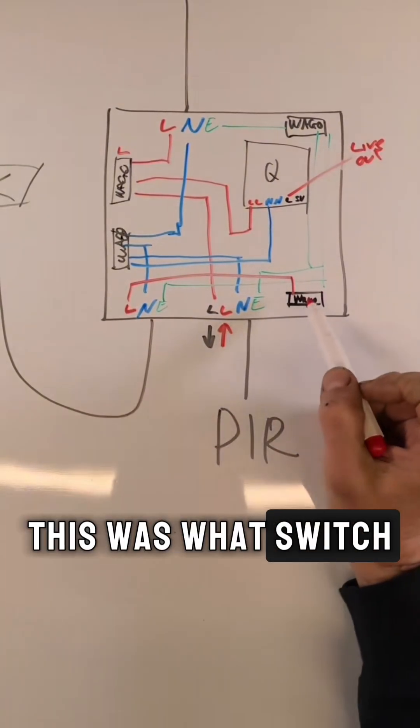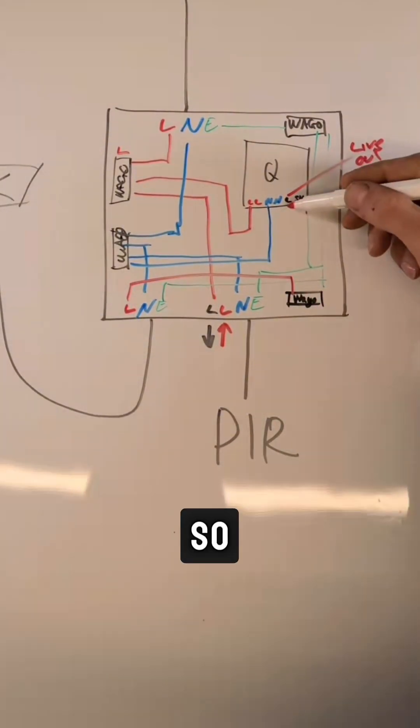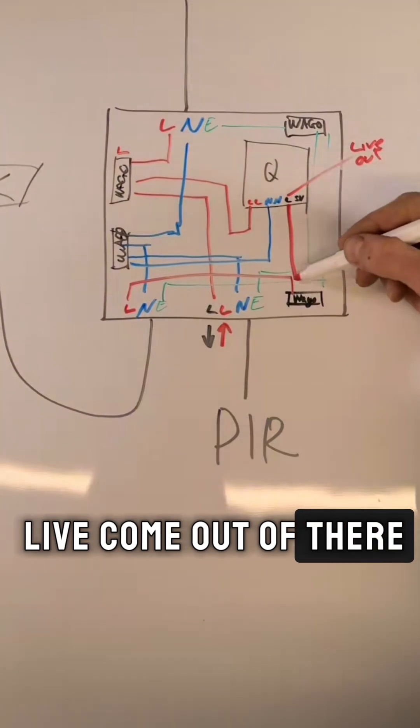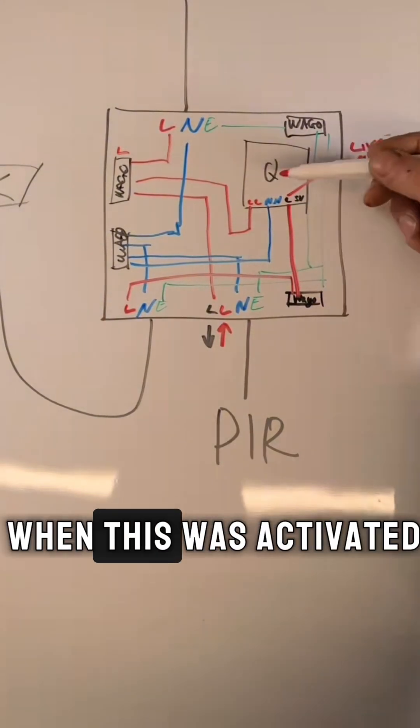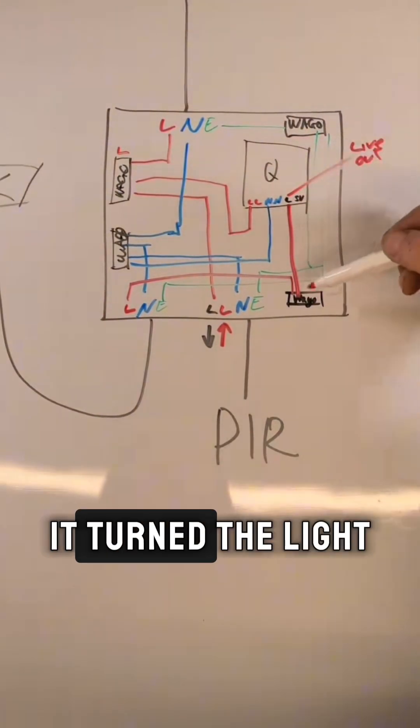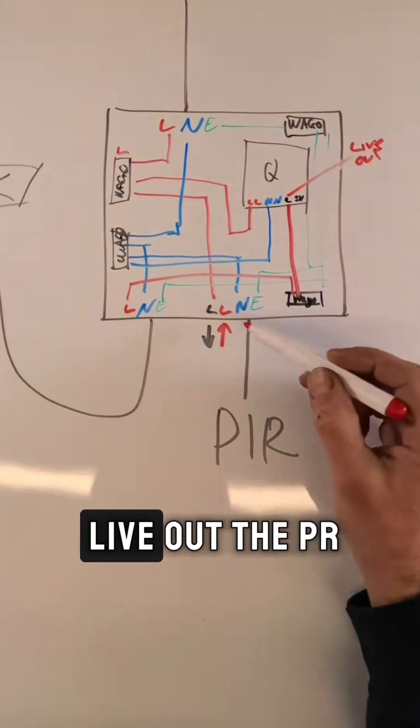So this was what switched the light on. So then we had the live come out there into the switch. So when this was activated, it turned the light on, and then a live out the PIR.